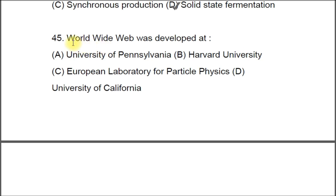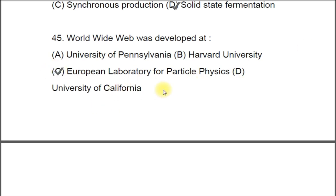Question 45: The World Wide Web (WWW) was developed at A) University of Pennsylvania, B) Harvard University, C) European Laboratory for Particle Physics, D) University of California. The correct answer is C, European Laboratory for Particle Physics.